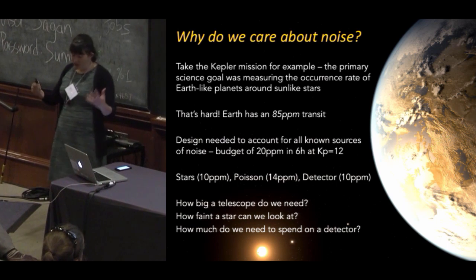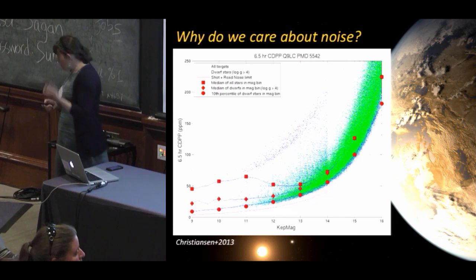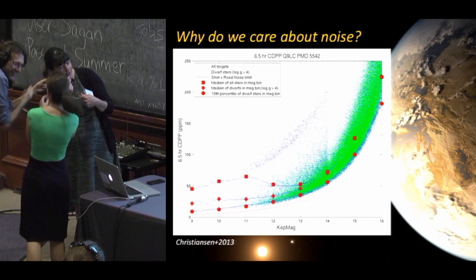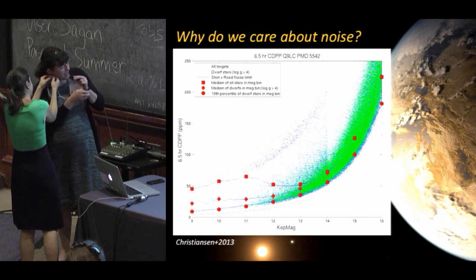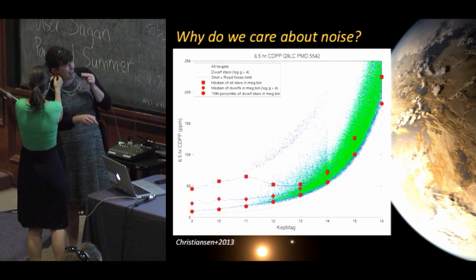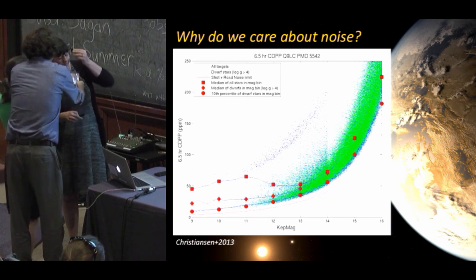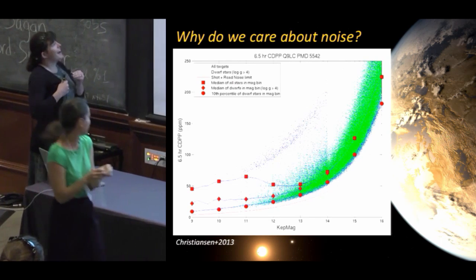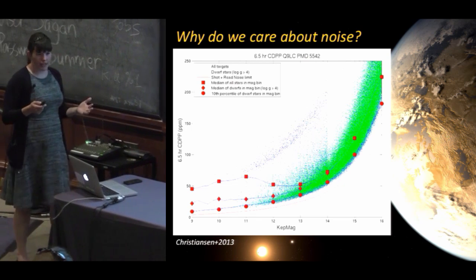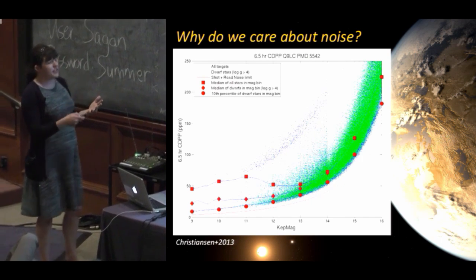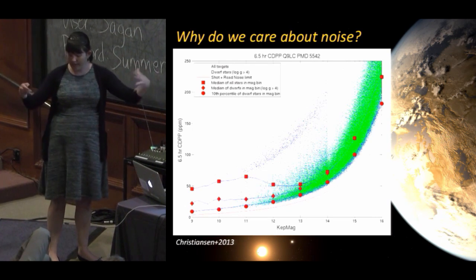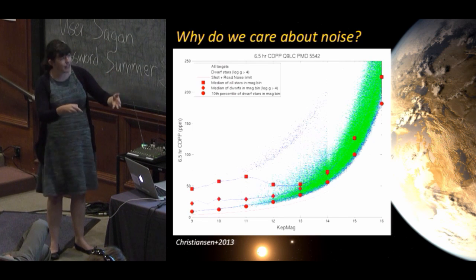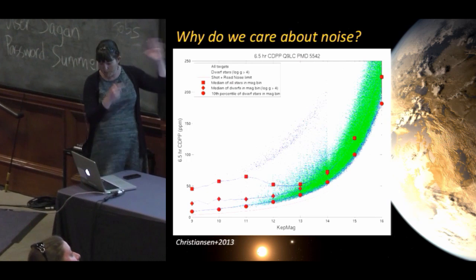This is why we care about noise — and, of course, in terms of budget, how much do we need to spend to make this happen. This figure I'm introducing now shows star magnitude on one axis and noise on the other. For bright stars we have lower noise, and for faint stars higher noise. I'm going to go into more details about the contributions to this plot, but I wanted to situate it now.